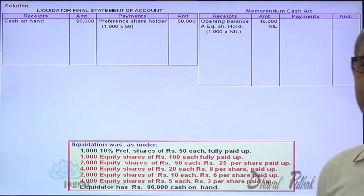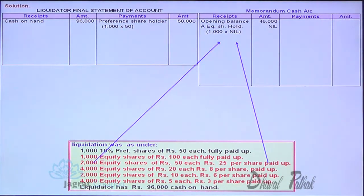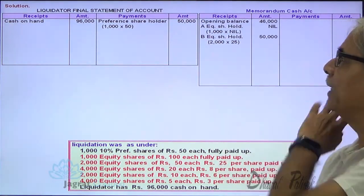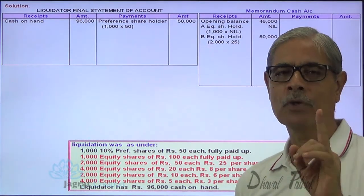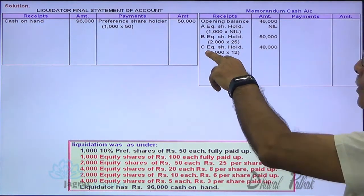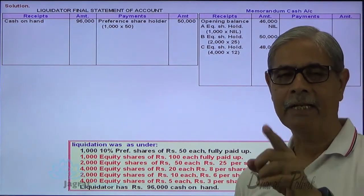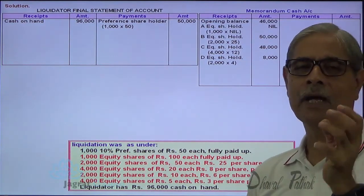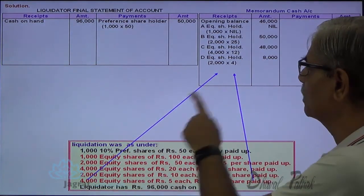For 2,000 equity shares of ₹50 each with ₹25 paid up, I can demand a last call of ₹25 on 2,000 shares — so ₹50,000 is hypothetically received from category B shareholders. For 4,000 equity shares of ₹20 each with ₹8 paid up, I can demand ₹12 on 4,000 shares — so ₹48,000 is hypothetically received from category C. For 2,000 shares of ₹10 each with ₹6 paid up, I demand ₹4 on 2,000 shares — ₹8,000 from category D. For 4,000 shares of ₹5 each with ₹3 paid up, I demand ₹2 on 4,000 shares — ₹8,000 from category E.